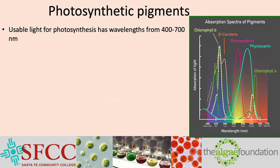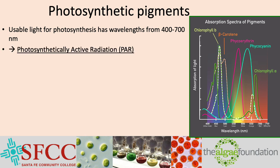The light used for photosynthesis has wavelengths ranging from 400 to 700 nanometers — basically the same portion of the spectrum we can see. The region of this spectrum is called photosynthetically active radiation, or PAR.